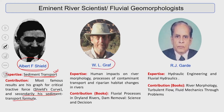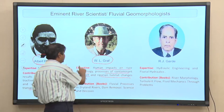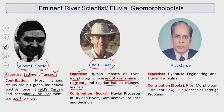Professor W.F. Graf looked beyond rivers to examine human impacts on river morphology — the process of contaminant transport, riparian habitat changes in rivers. These are the key issues facing most Indian rivers today in terms of water quality and river health. His studies on fluvial processes in dryland rivers and dam removals are foundational.